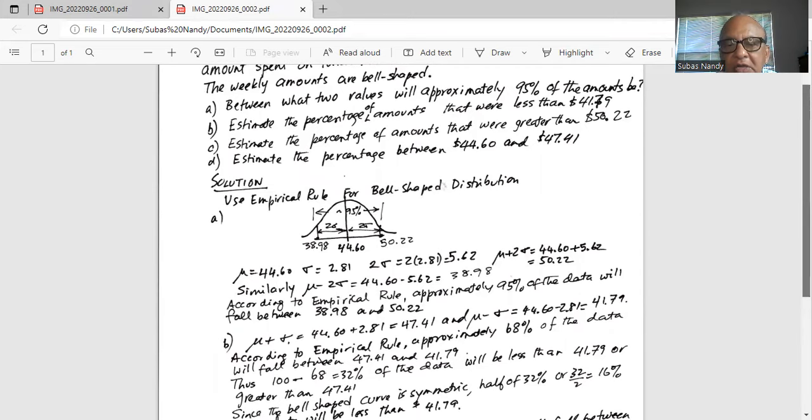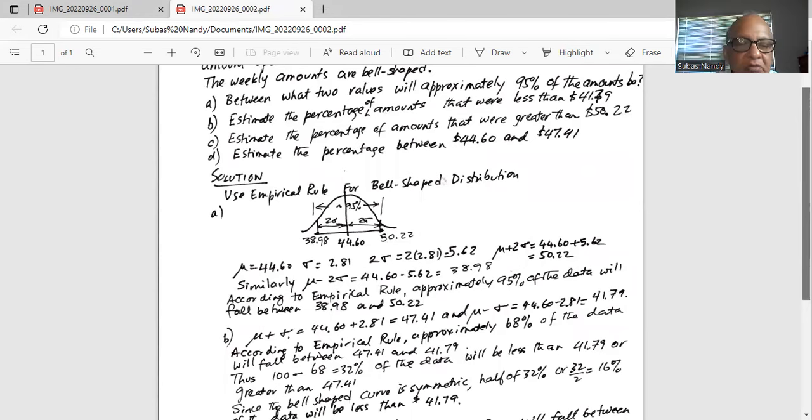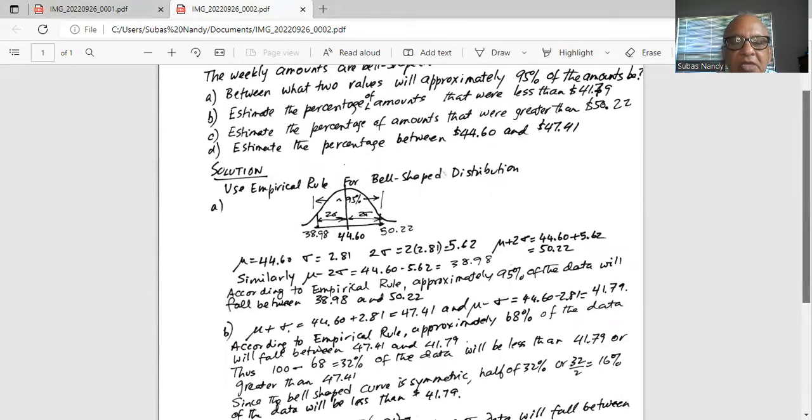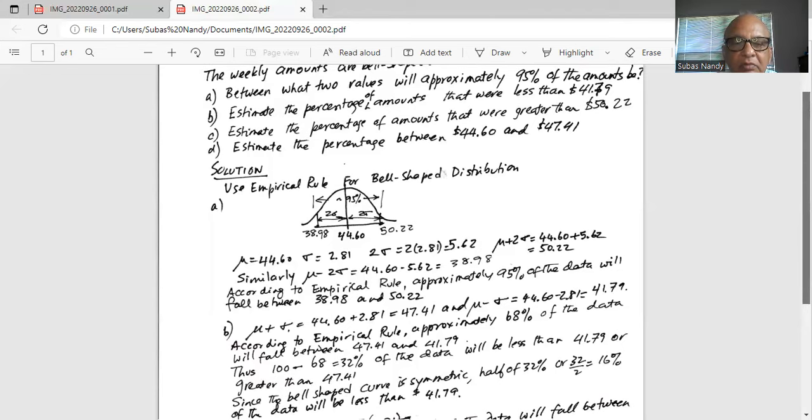According to empirical rule, approximately 95% of the data will fall between $38.98 and 50.22, 2 sigma.